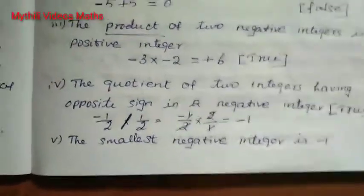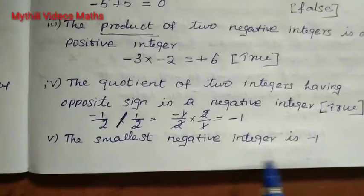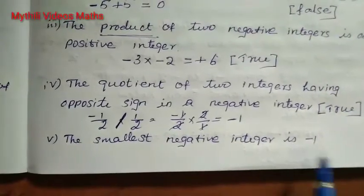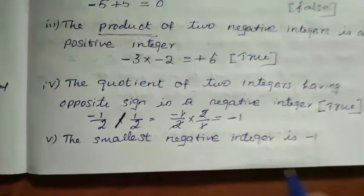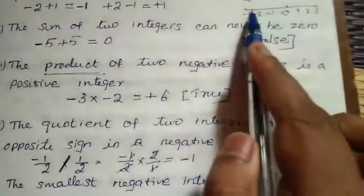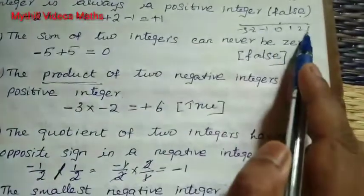And then finally, the fifth statement: the smallest negative integer is minus 1. Let us look at the number line.